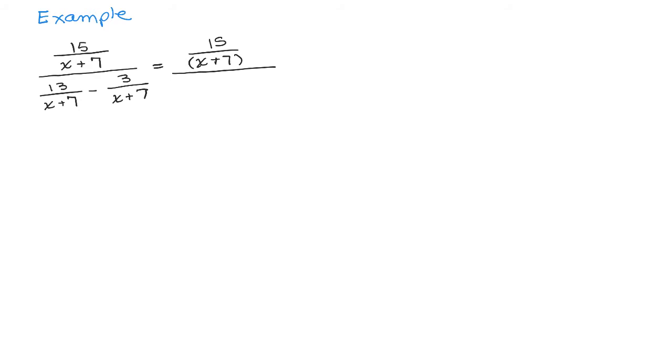But in the denominator, the 13 over X plus 7 minus 3 over X plus 7, well, luckily those are the same denominators so all I have to do is 13 minus 3, giving you 10 over X minus 7.